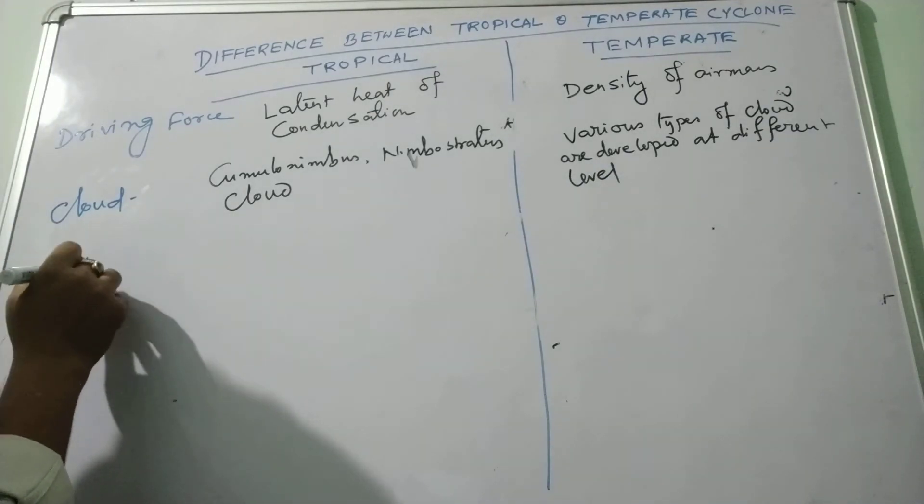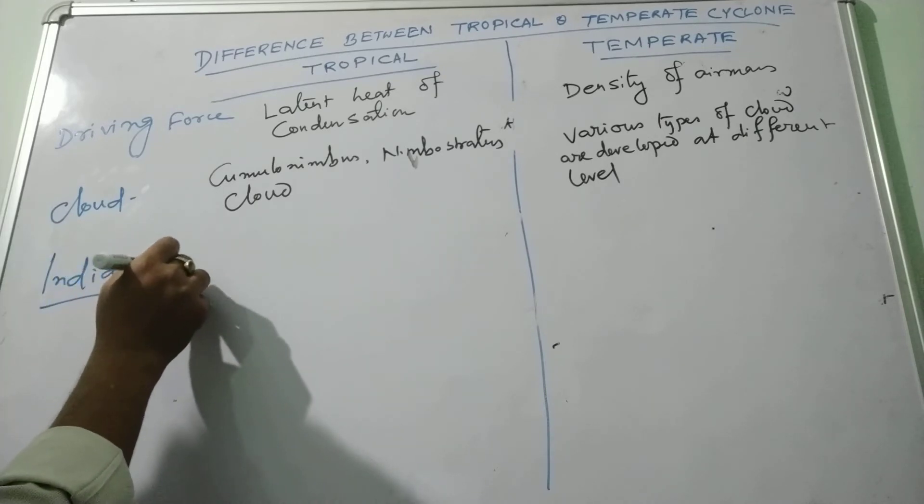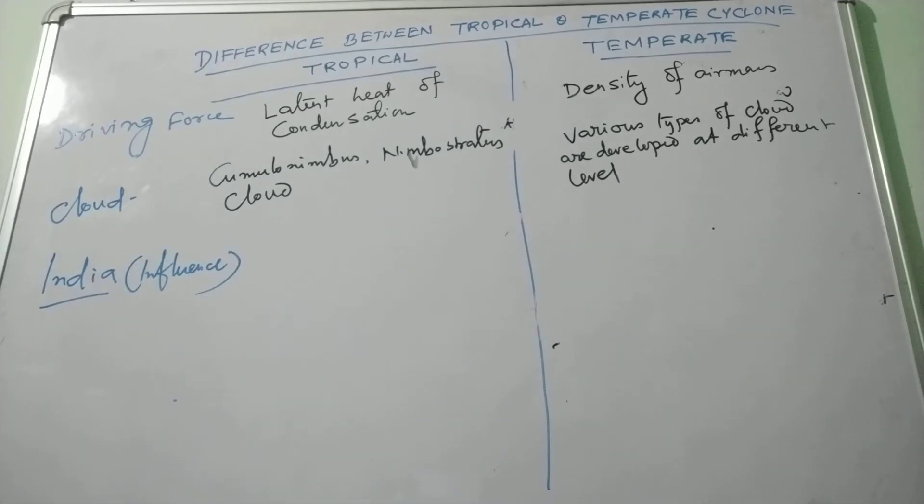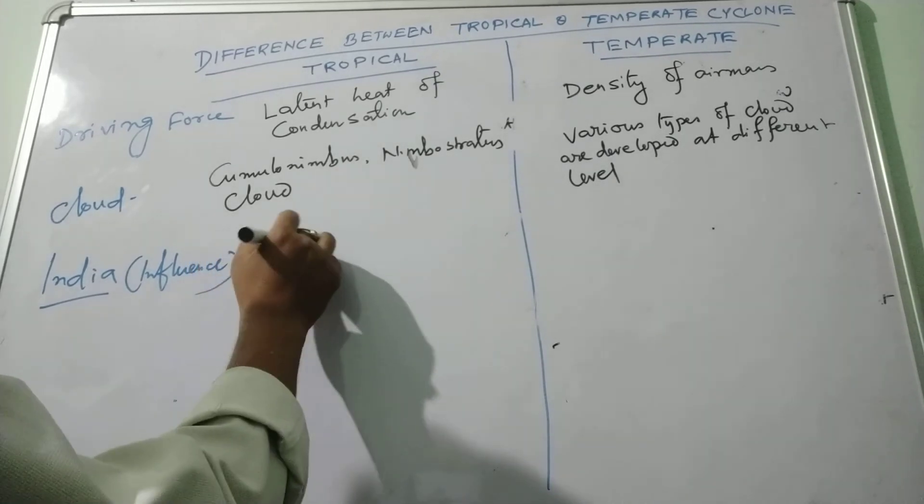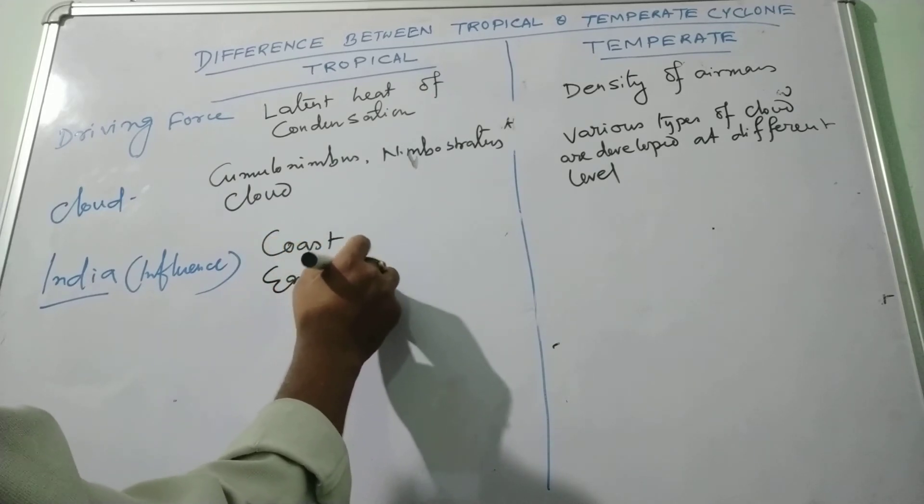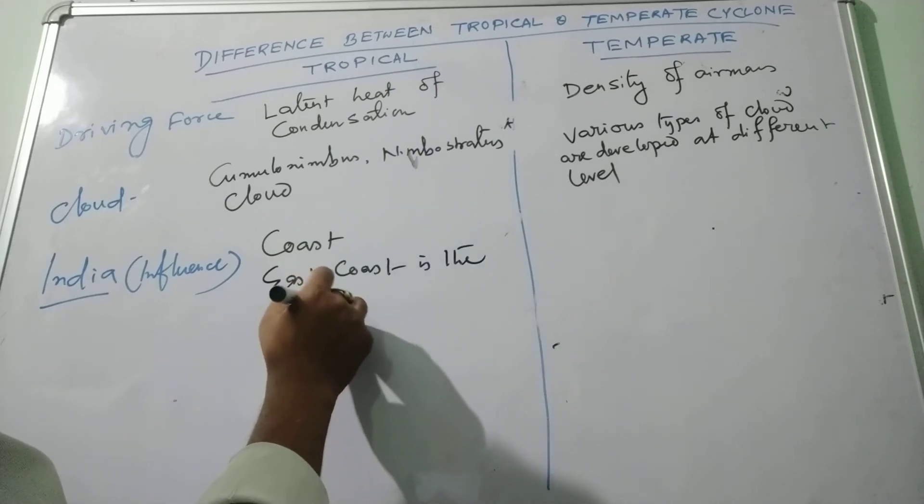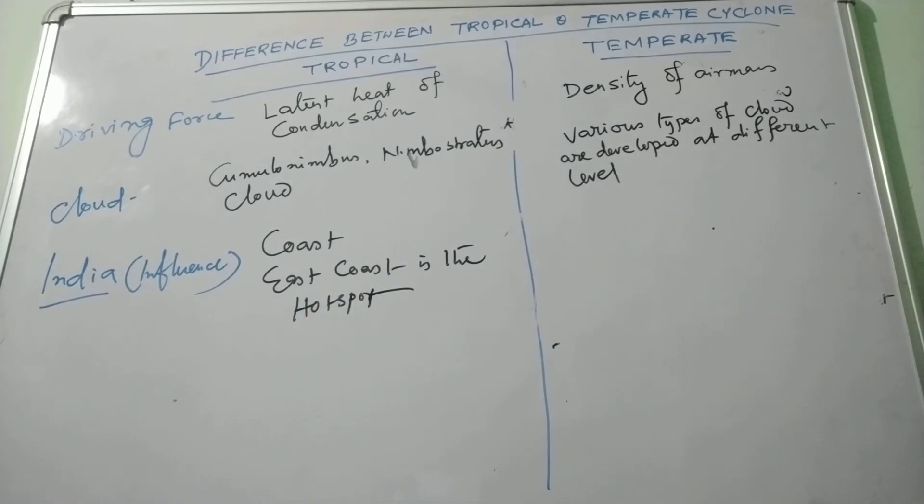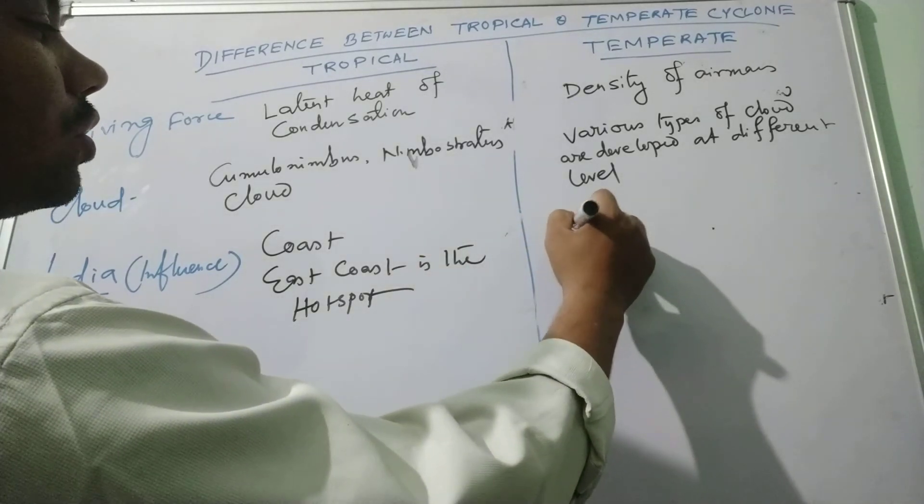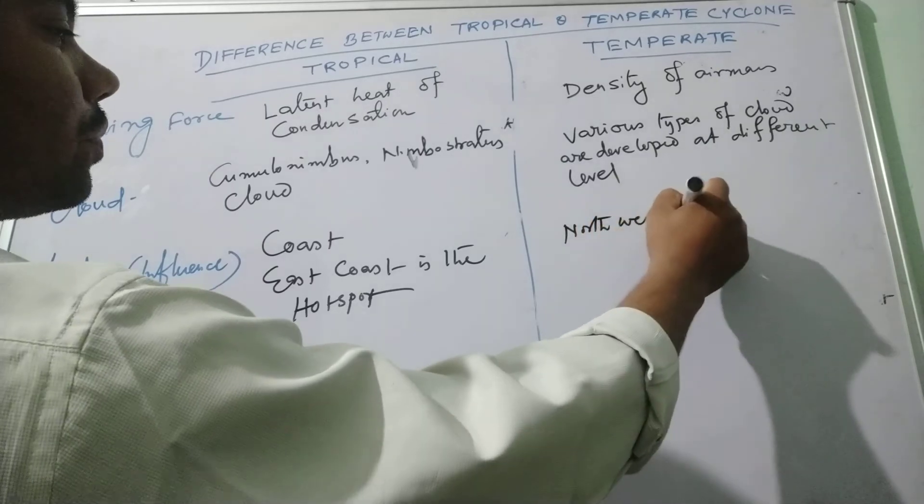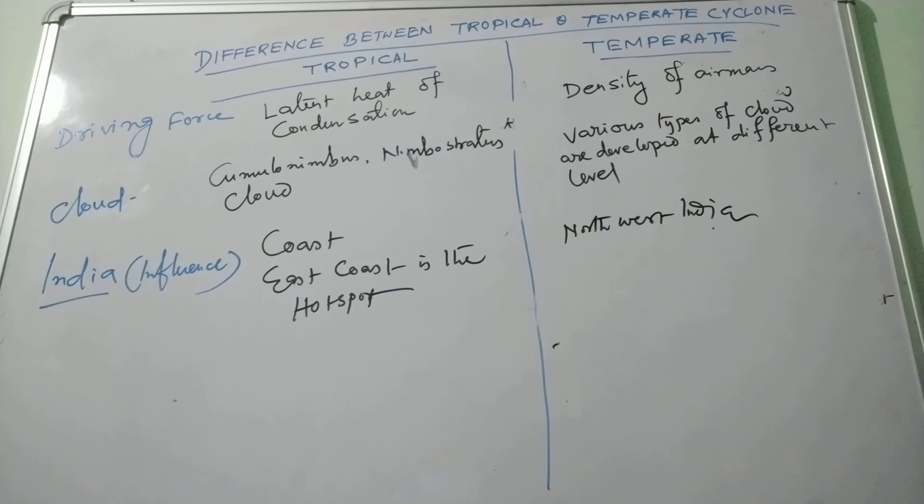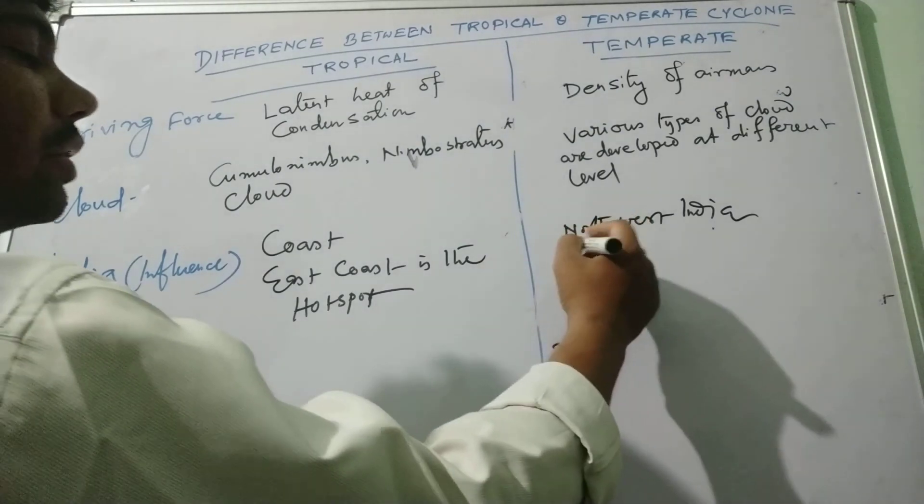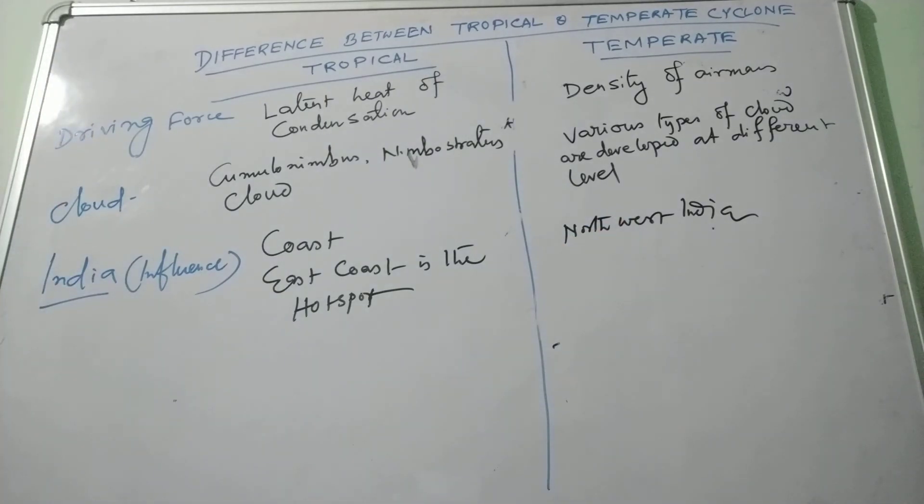In India, its influence mostly affects the coasts by this tropical cyclone, and east coast is the hot spot of the tropical cyclone. And temperate cyclone brings the rain in north to east India due to the western disturbances and associated with the instability of the western disturbances. These are some basic differences of the tropical and temperate cyclone. Thank you for watching.